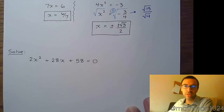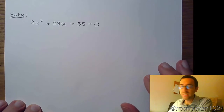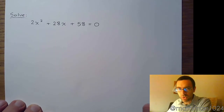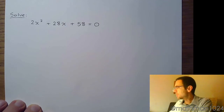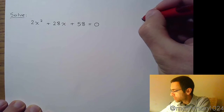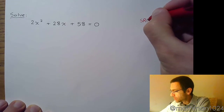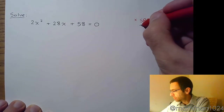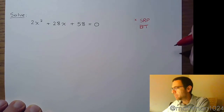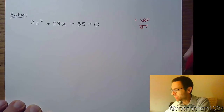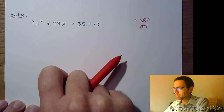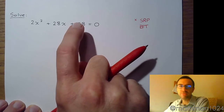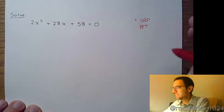Now let's look at the next one: 2x squared plus 28x plus 58 equals zero — a classic quadratic equation. Before throwing everything into the quadratic formula, let's go through our progression. First, can we use the square root property? Since we have both x squared and x, that won't work. Maybe factoring? We can factor out a common factor of 2, leaving x squared plus 14x plus 29, but there are no factors of 29 that give 14, so factoring won't work either.